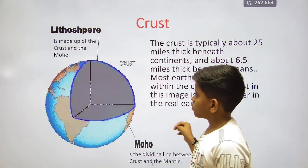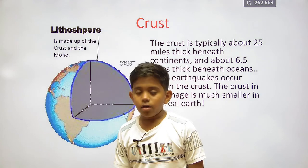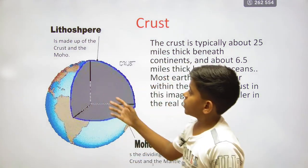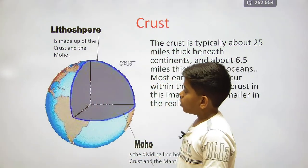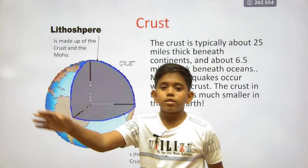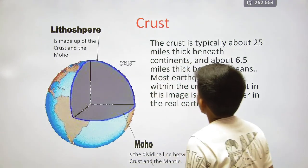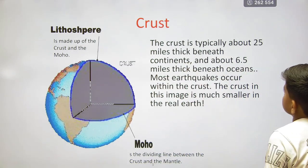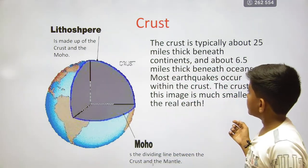The inner core is the solid innermost layer of the earth. The lithosphere is made of the crust and moho. The lithosphere means the land part of the earth.